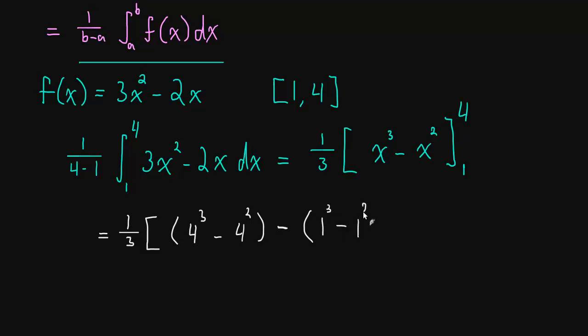So this is 1/3 times, let's see here. We have 4³ minus 4² minus (1³ minus 1²). So just to be clear, this is what happened when we plugged in 4. We subtracted what happened when we plugged in 1 into our antiderivative that we found. And we still have the 1/3 out front multiplying. So let me clean that up.